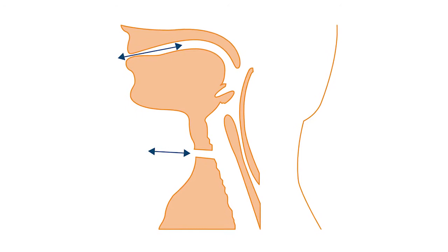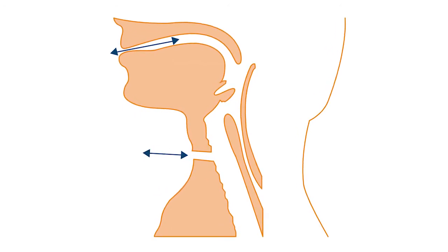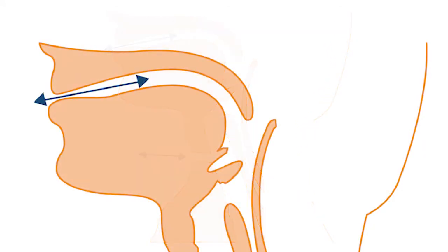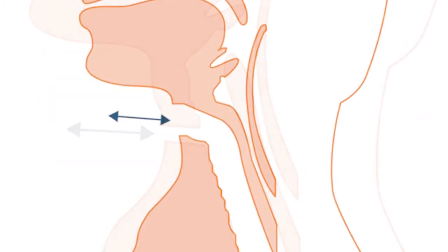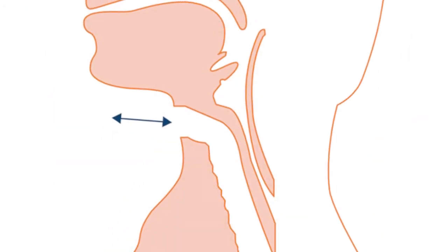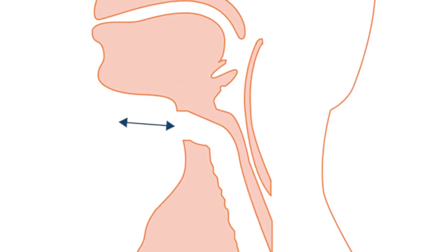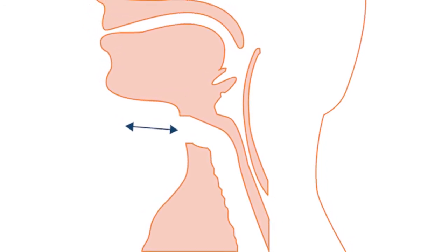In a tracheostomy patient, you have two potentially patent airways — both the upper airway, i.e. the mouth, but also the stoma in the neck. A patient with a laryngectomy has no connection between the upper airway of their mouth and the lower airway of their lungs.